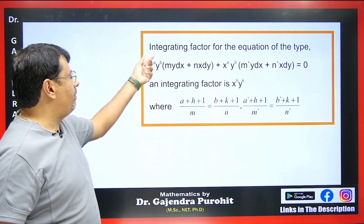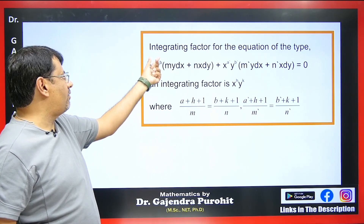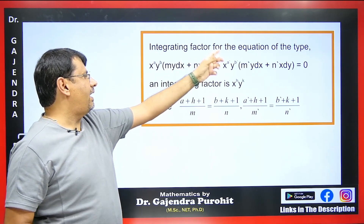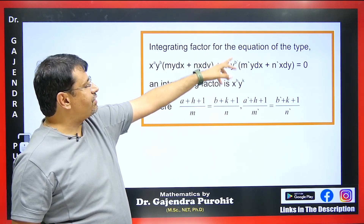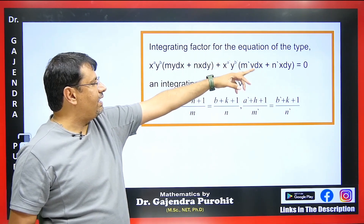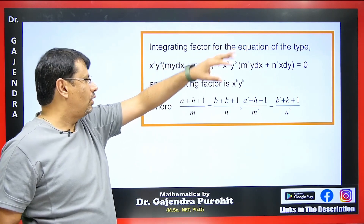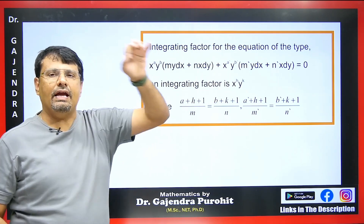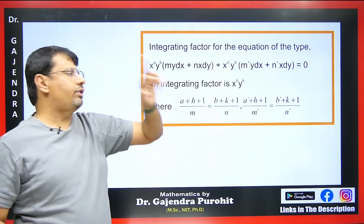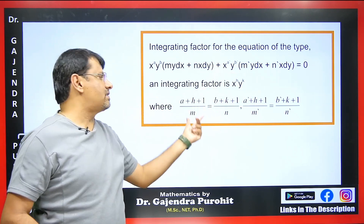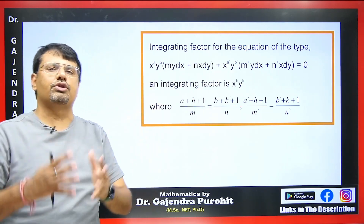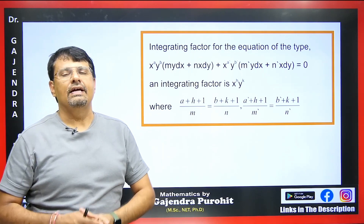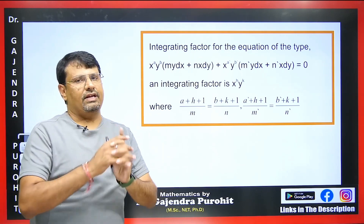If we have a differential equation in the form x^a · y^b · (m·y dx + n·x dy) + x^(a') · y^(b') · (m'·y dx + n'·x dy) = 0, and if x^h · y^k is the integrating factor, then to find the values of h and k we have two equations. Solve them to determine the values of h and k.